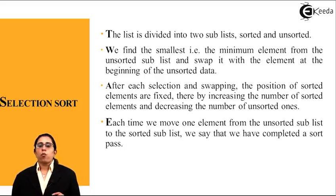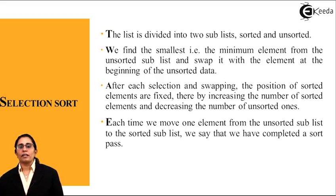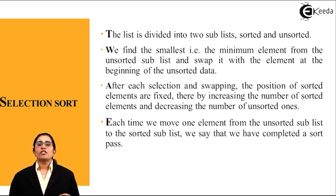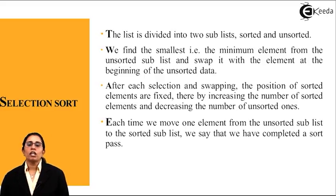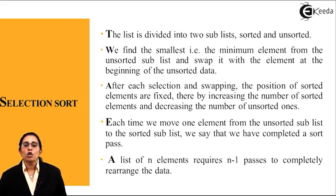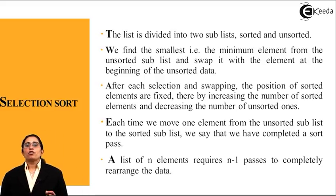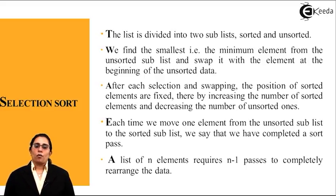Each time we move one element from the unsorted sublist to the sorted sublist, we say we have completed a sort pass. A list of n elements always requires n minus 1 passes to completely rearrange the data. If n equals 5, then we require a minimum of 4 passes to sort the data.